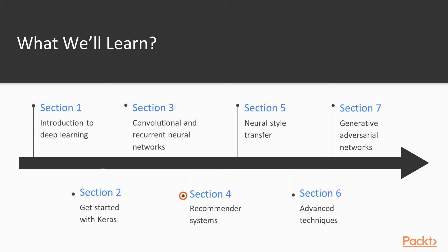Then we're going to see what recommendation systems are and how we can use deep learning to leverage user preferences. Then we're going to see about style transfer — how to apply an art style to any image. Before last, we're going to see advanced training techniques such as hyperparameter search and training on small datasets. And finally, we're going to see generative adversarial networks, which are at the cutting edge of research.